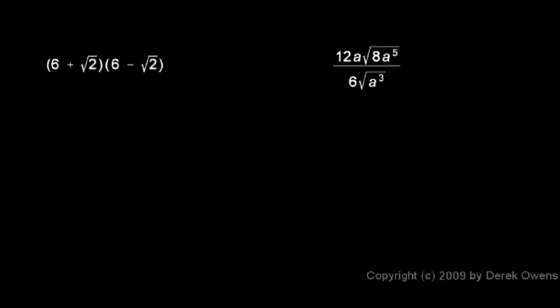6 times 6 is 36. 6 times the negative square root of 2 is negative 6√2. And here we have 6 times the positive square root of 2, so that's plus 6√2. And here we have the square root of 2 times the square root of 2, and there's a negative sign in there, so it's minus the square root of 2 squared, which is just 2.